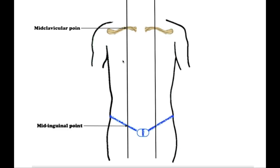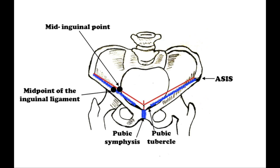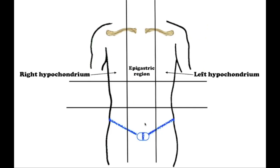The vertical planes are two mid-clavicular lines that run from the middle of the clavicle to the mid-inguinal point. The mid-inguinal point is halfway between the anterior superior iliac spine of the pelvis and the pubic symphysis. The vertical planes subdivide each of the three previously mentioned parts of the abdomen into three secondary regions.